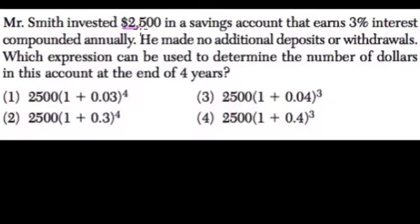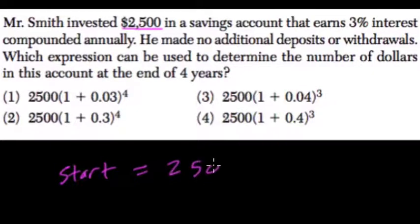Mr. Smith invested $2,500. So his starting investment, which is a key number in these kind of problems, is $2,500. And he earns 3% interest compounded annually. So that means each year he gets 3% on top of what he had before.